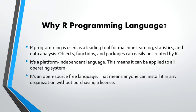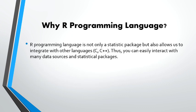R is an open-source, free language — you don't need to purchase a license or pay any money to use the software, and you don't need to be in a specific organization to use it. You can freely access it from the browser, download it, and learn from the browser itself. R programming language is not only a statistics package but also allows us to integrate with other languages like C and C++, so you can easily interact with many data sources and statistical packages.